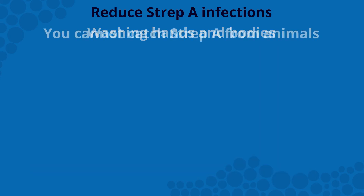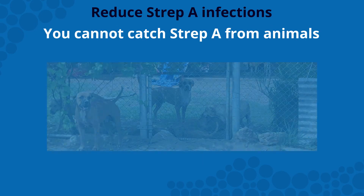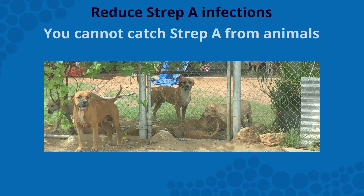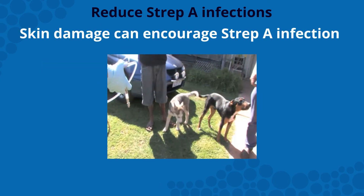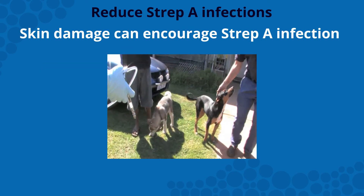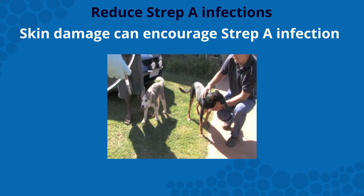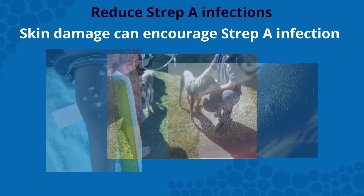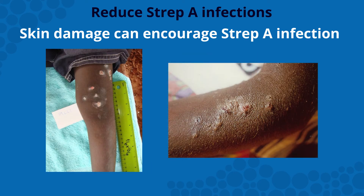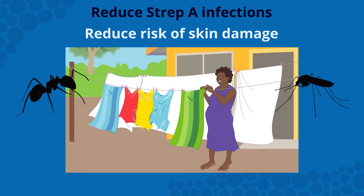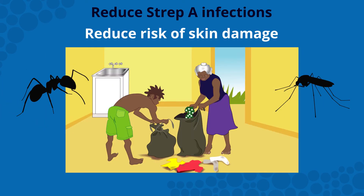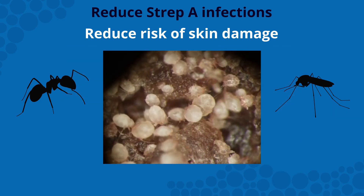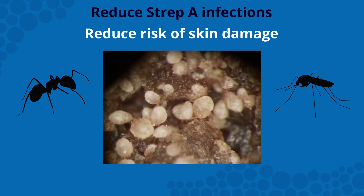Strep A is a human-only infection with no animal or insect hosts. However, animal and insect bites and scratches and abrasions from rubbish and debris around the home and community can cause skin damage that can encourage Strep A skin infection. Washing clothes, bedding and towels can reduce the transmission of scabies, mites and lice which can cause skin damage.